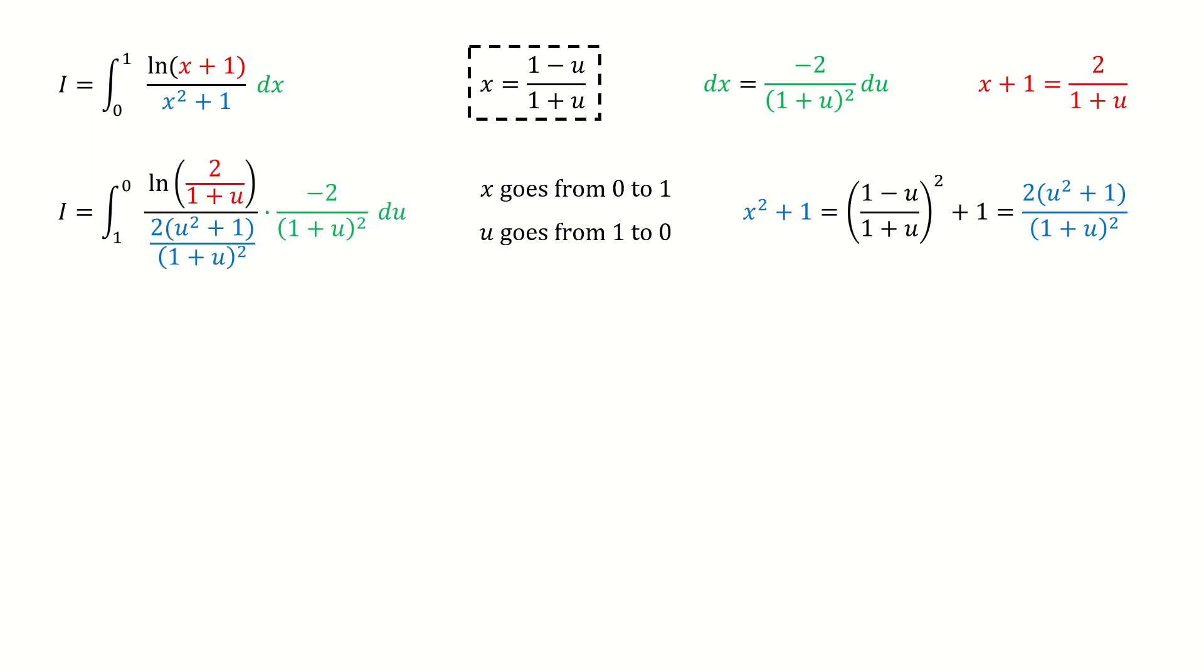After plugging the substitution, we got here. And note for the integral limit, they are flipped. So these two terms cancel out, the 2 cancels out. And then we use this negative sign to flip the lower and upper limit back. So we got here.